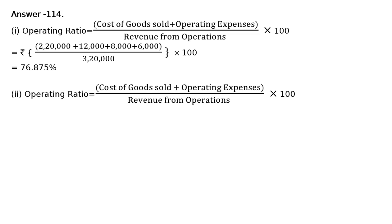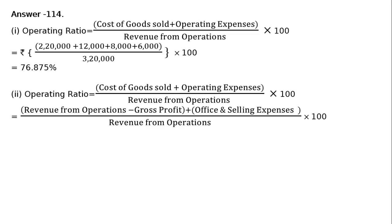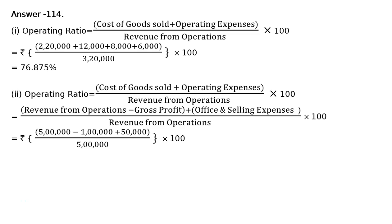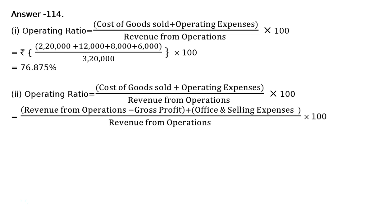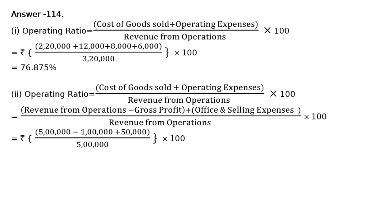Operating ratio is equal to cost of goods sold plus operating expenses, whole divided by revenue from operations, multiplied by 100. Here Rs. 5 lakhs is the revenue from operations (both cash and credit), minus gross profit, which gives us cost of revenue from operations. Plus office and selling expenses Rs. 50,000, whole divided by Rs. 5 lakhs, into 100. That is Rs. 4,50,000 upon Rs. 5,00,000 into 100, which is equal to 90%.